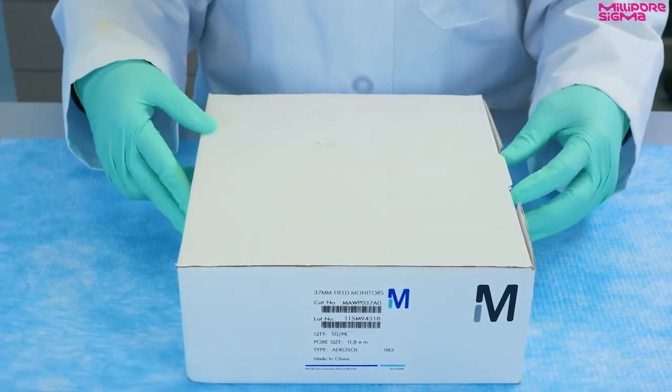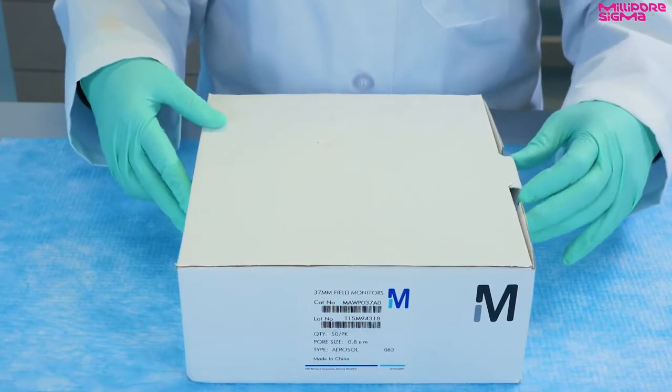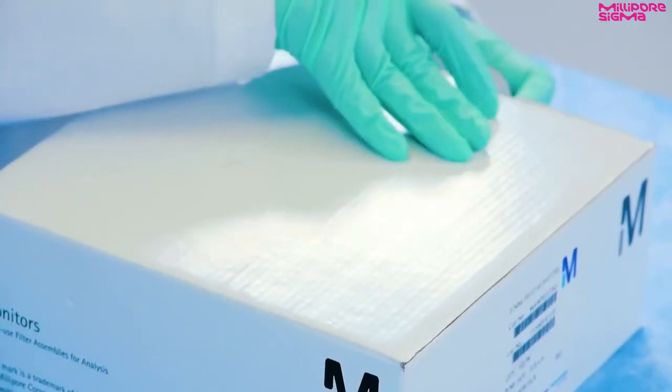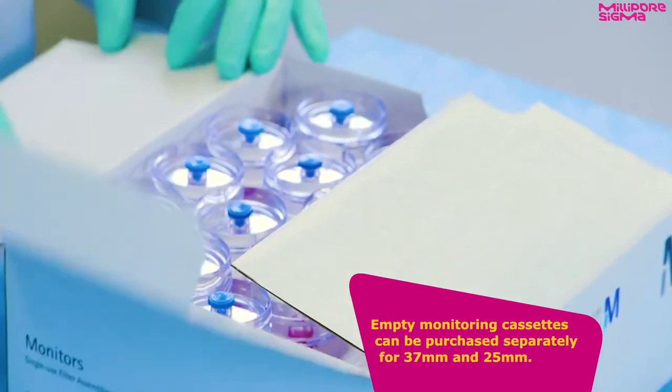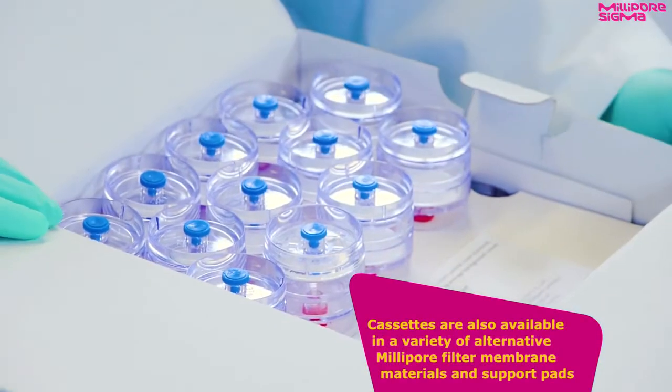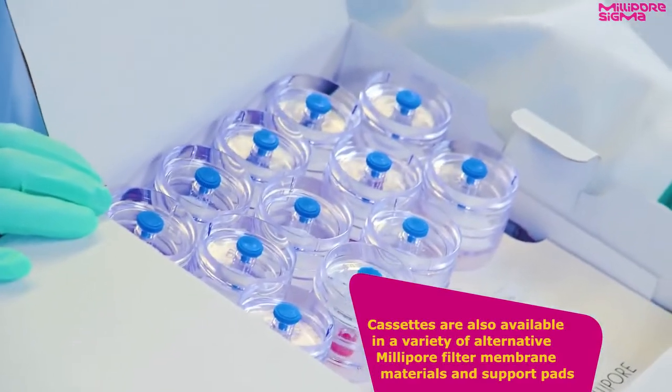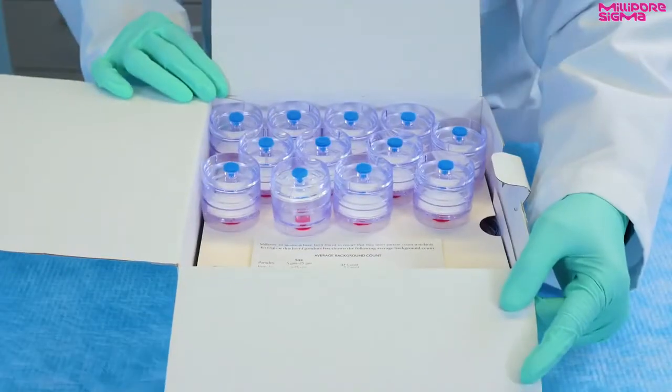The most commonly used air monitors are 37 millimeter 0.8 micron MCE. Empty monitoring cassettes can be purchased separately for 37 millimeter and 25 millimeter. Cassettes are also available with a variety of alternative Millipore filter membrane materials and support pads.